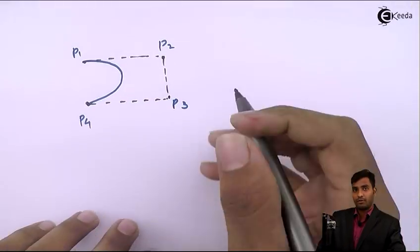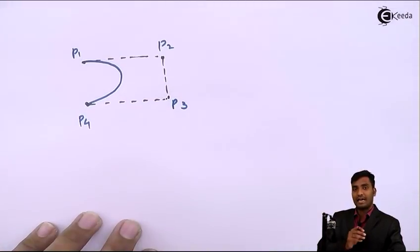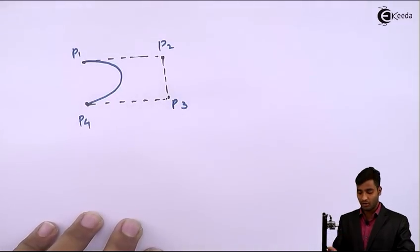If the first and last control points coincide, then the curve will be closed.